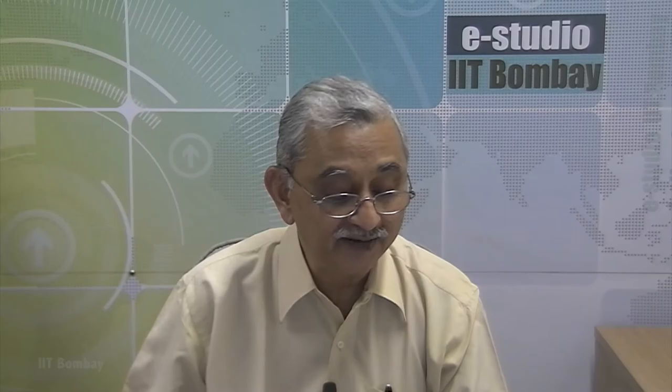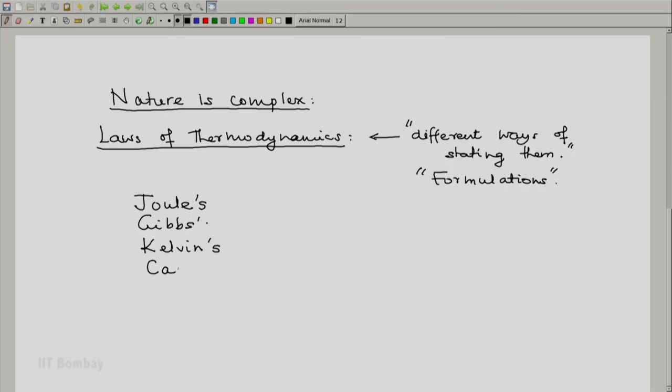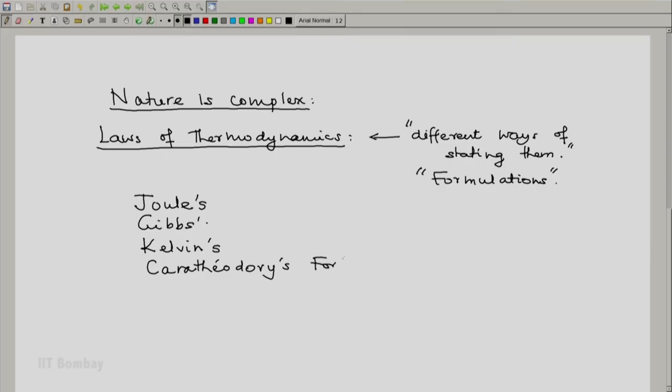Each one has its advantages and disadvantages. The modern formulations belong to a few people. A very significant name is Konstantin Karathiodori, a French-German scientist-mathematician. His formulation of thermodynamics based on mathematics and geometry is what we are going to use for the first law of thermodynamics.